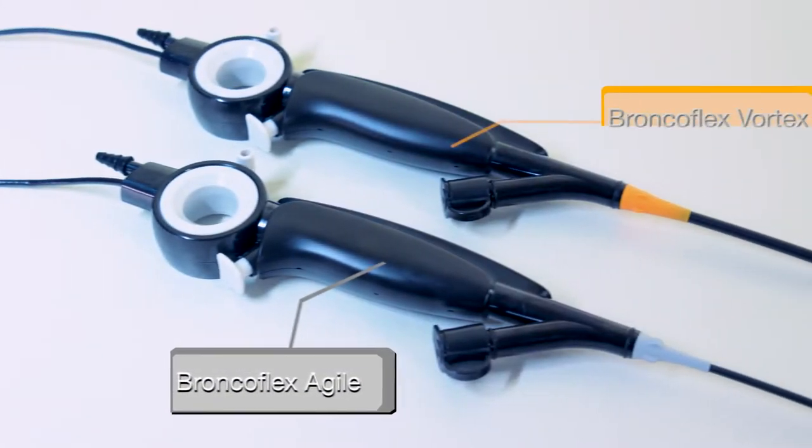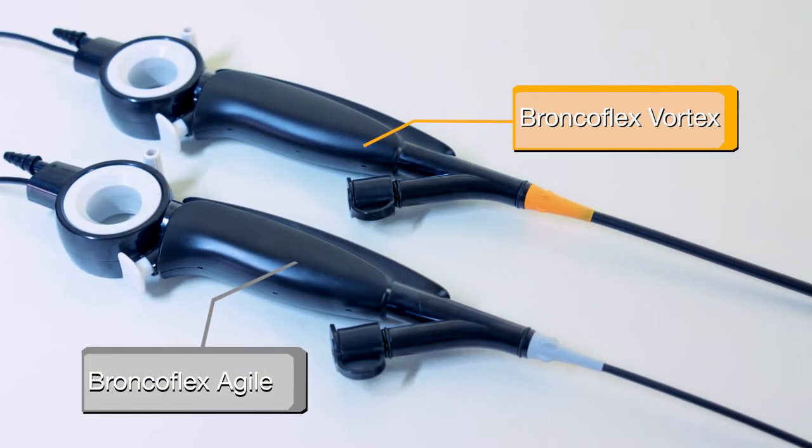The BroncoFlex is available in two sizes that are color-coded: gray for BroncoFlex Agile and orange for BroncoFlex Vortex.